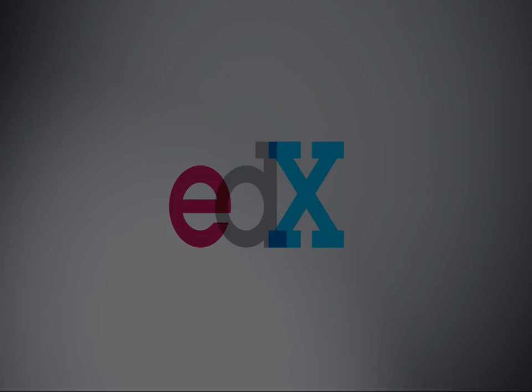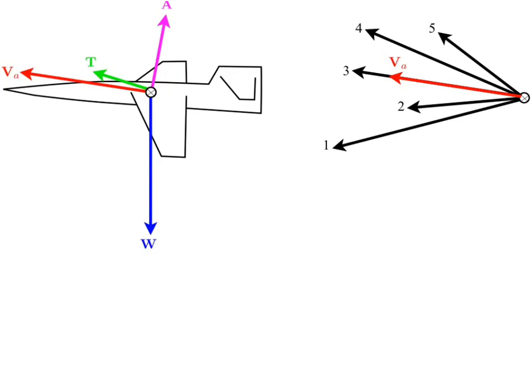In this problem we're asked to determine what the velocity direction is a short time after the picture being shown. Here VA is the initial velocity and the options we have for the velocity a short time later are these five black arrows. We're told that the forces acting on the center of gravity of the aircraft are the weight, the thrust, and the aerodynamic force.